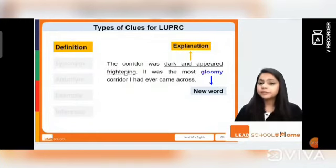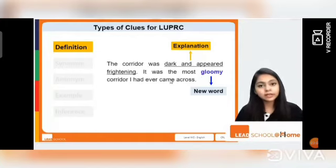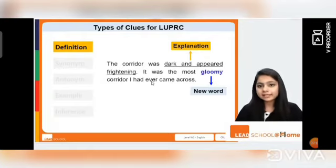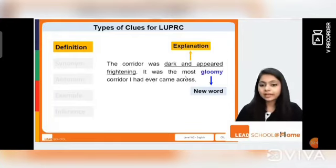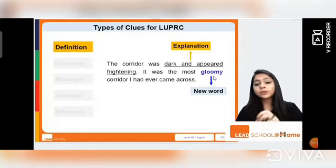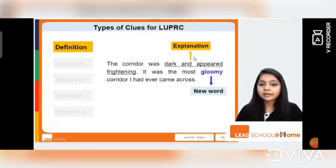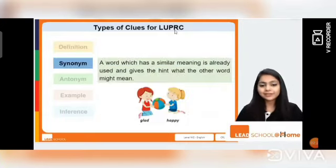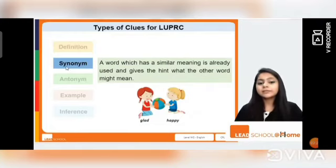Consider: 'The corridor was dark and appeared frightening. It was the most gloomy corridor I had ever come across.' Reading this, I understand that two lines describe the same corridor — one says it was dark and appeared frightening, and the other says it was gloomy. So the meaning of the new word 'gloomy' must be dark and frightening — something that appears depressing.